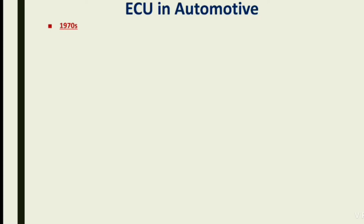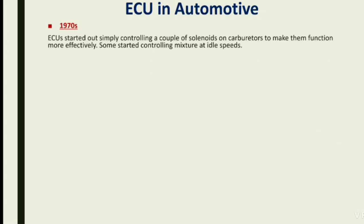Let's see a brief introduction on the history and timeline of the ECU in automotive. In the 1970s, ECUs started out simply controlling a couple of solenoids or carburetors to make them function more effectively. Some started controlling mixture at idle speeds — for example, to keep passengers and the driver safe using simple solenoid techniques.